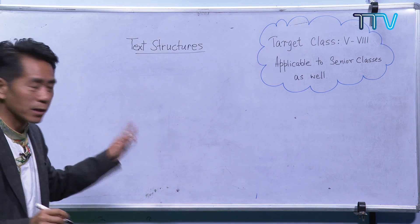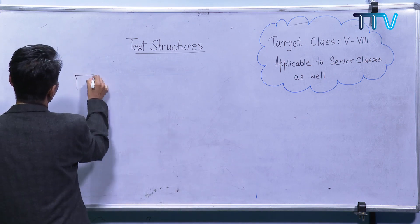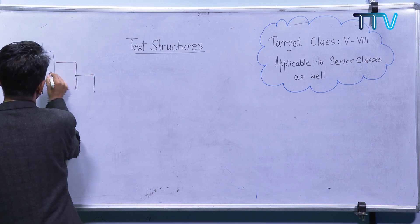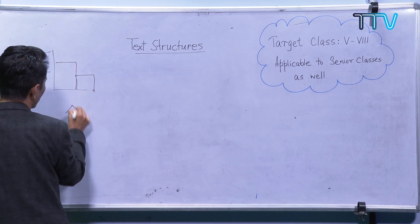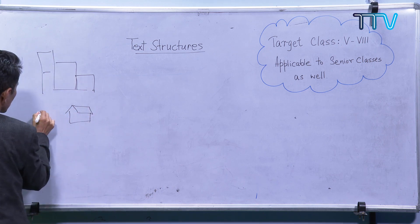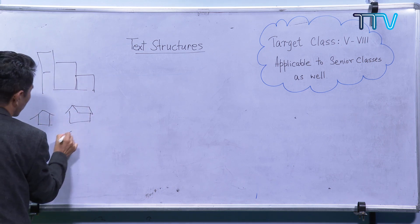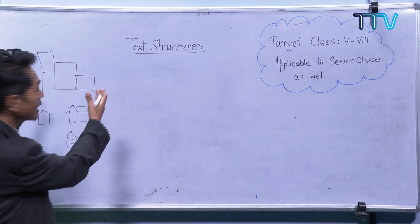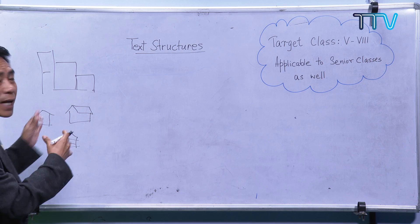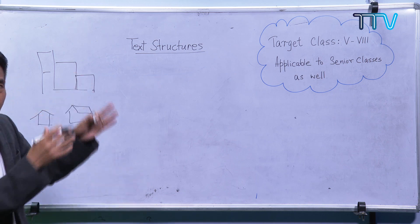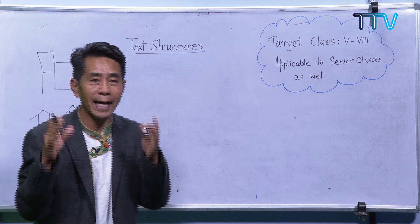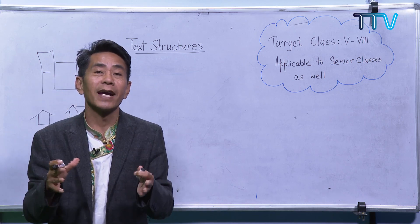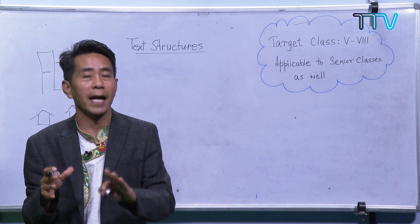A text structure — there are different types. For a building, we have got so many types: simple houses, one-storey house, two-storey house, three-storey. These are the different structures used by builders. When it comes to writers, they arrange their writing in basically four types.